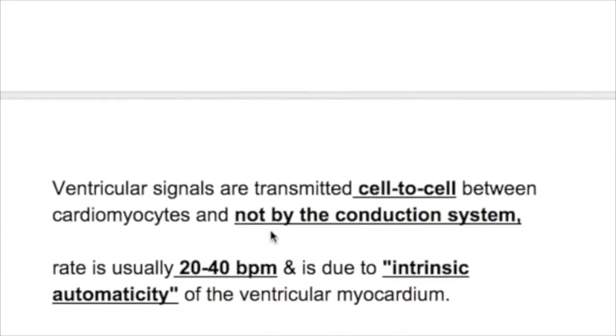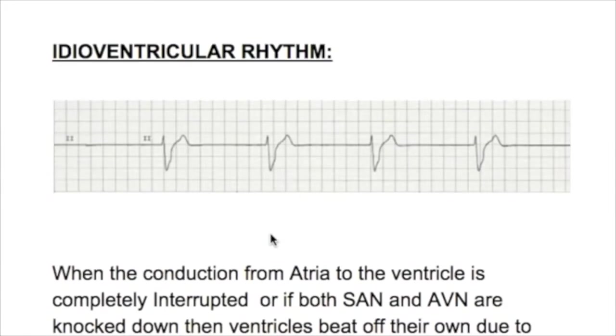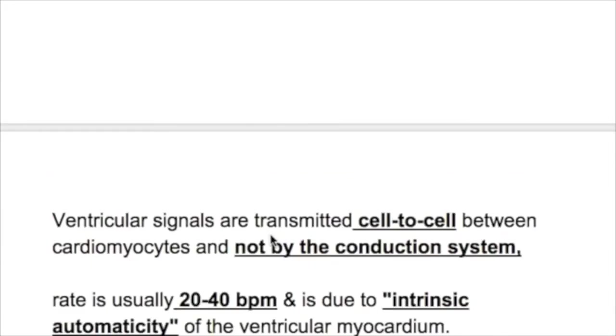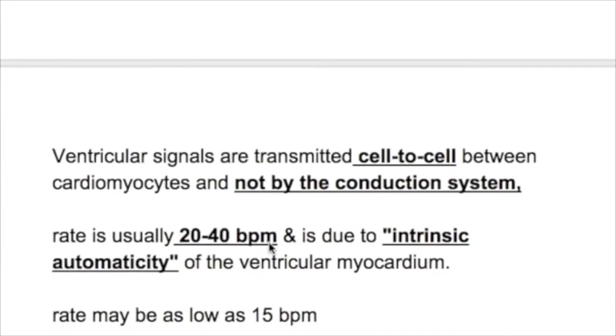The rate in idioventricular rhythm is usually between 20 to 40 beats per minute, and is due to the intrinsic automaticity of the ventricular myocardium.